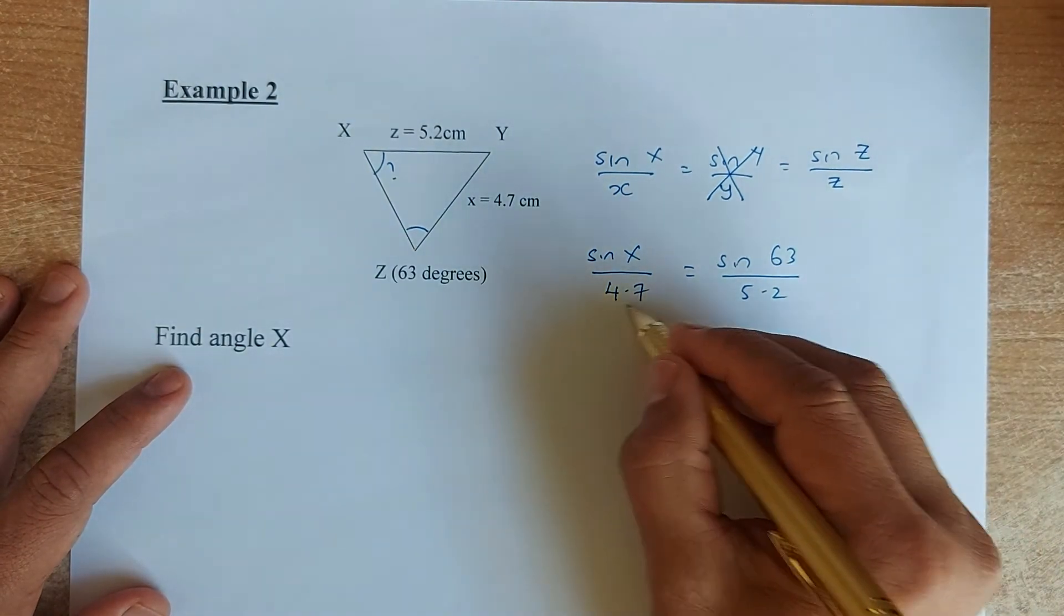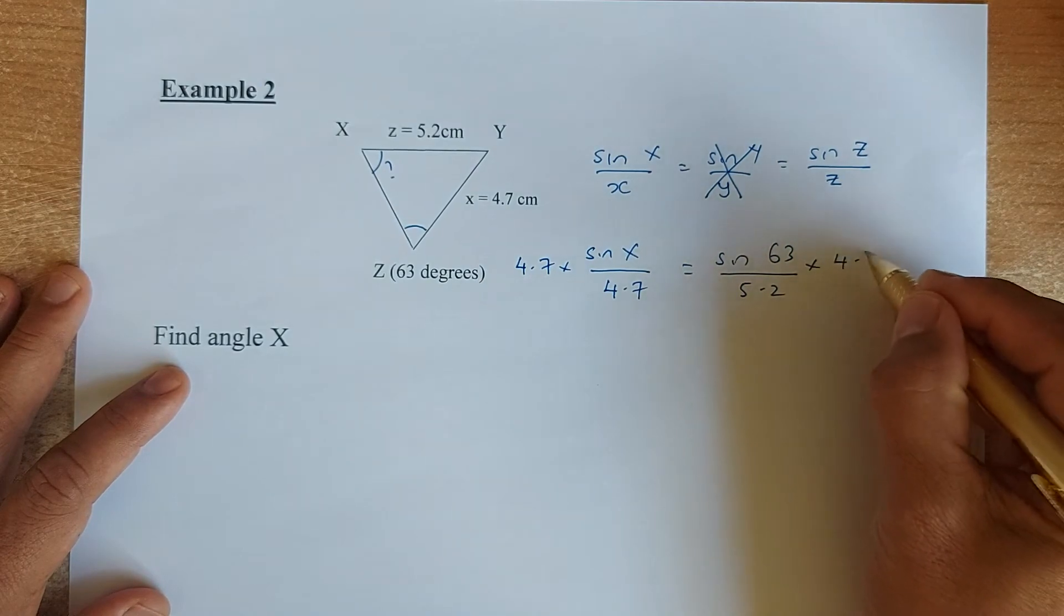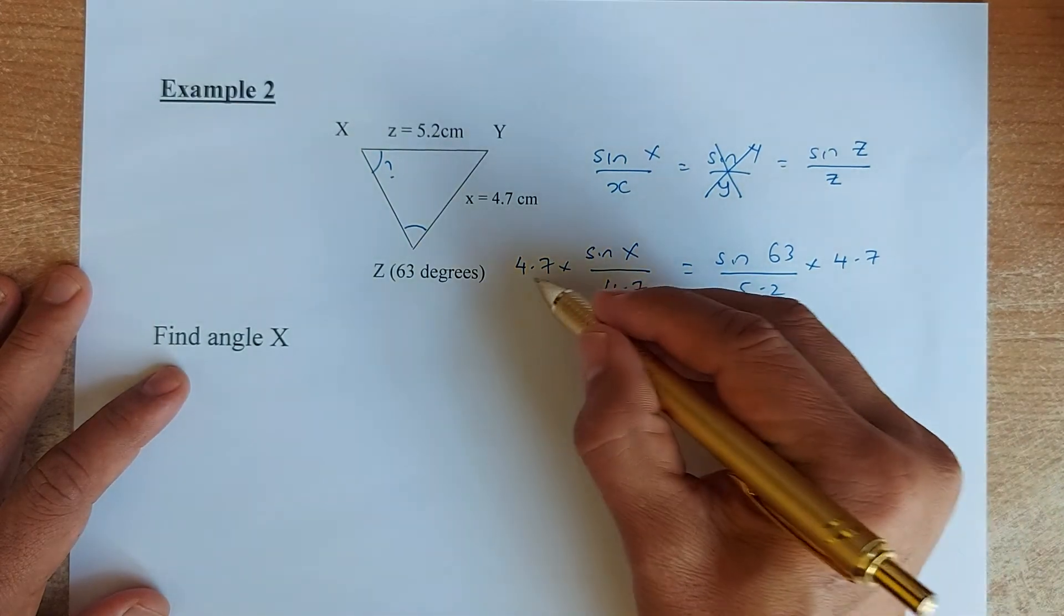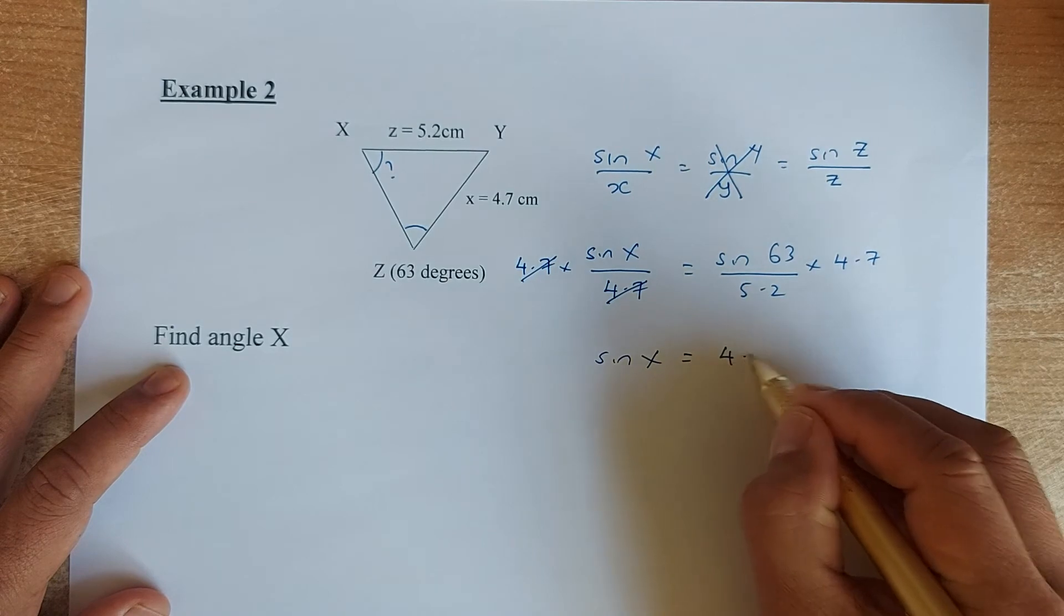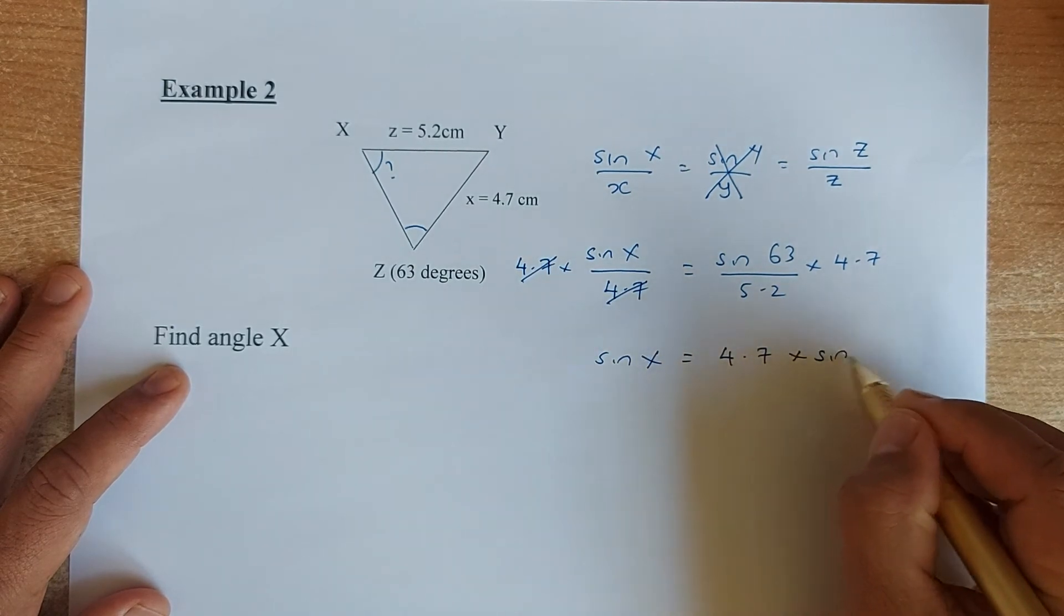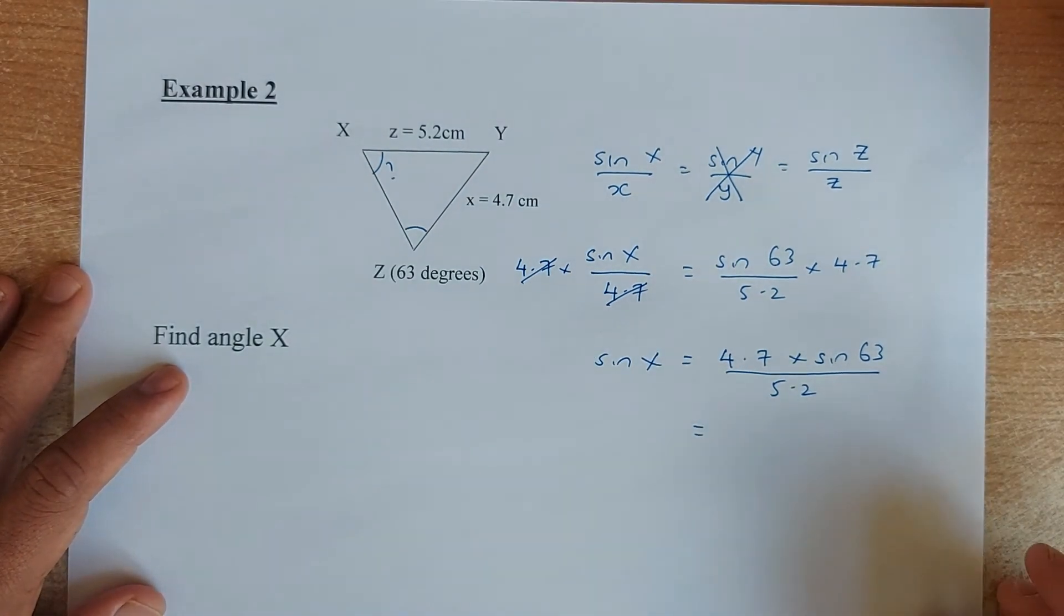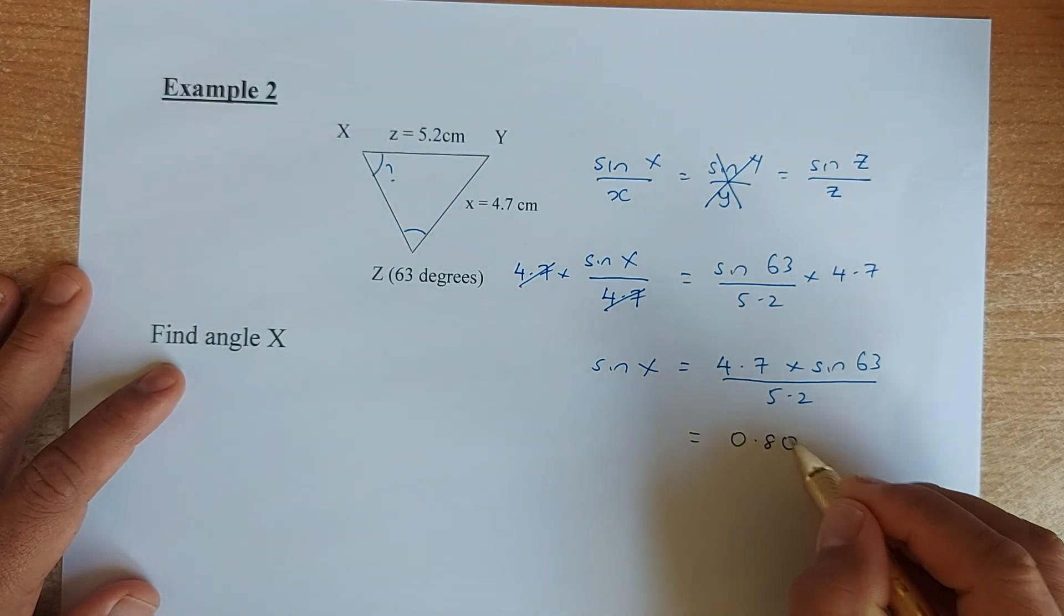Now what do you do? You need to get rid of the 4.7. So you multiply by 4.7 on the left, you multiply 4.7 on the right. So again, 4.7 divided by 4.7 is going to be 1. And then you get sine X equals 4.7 multiplied by sine 63 divided by 5.2. Of course, the next step, you put in your calculator. And remember, your mode should be in the degree mode. If not, it won't work. So you put in your calculator and I found it to be 0.8053.